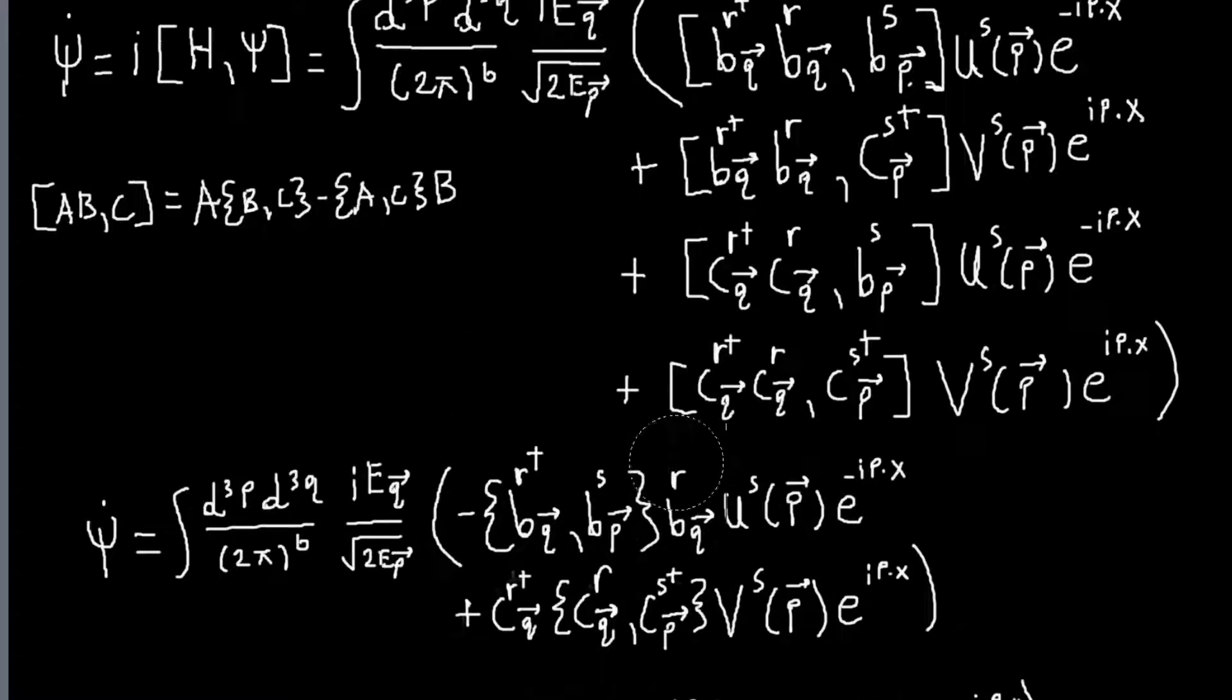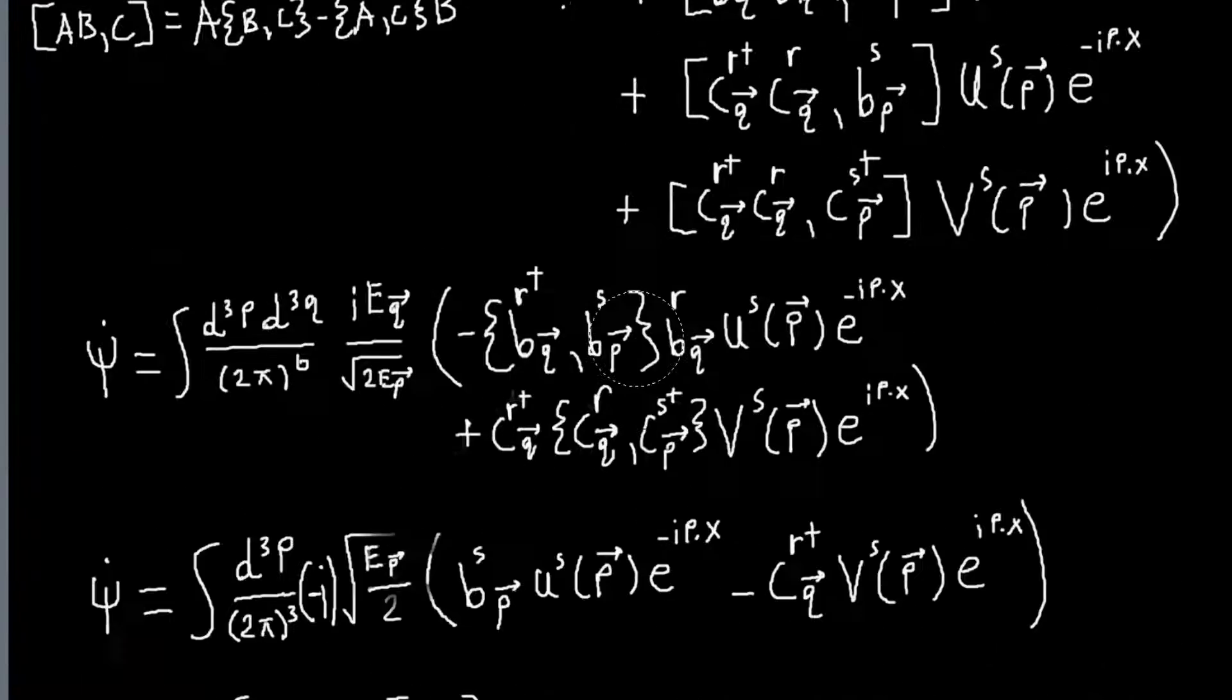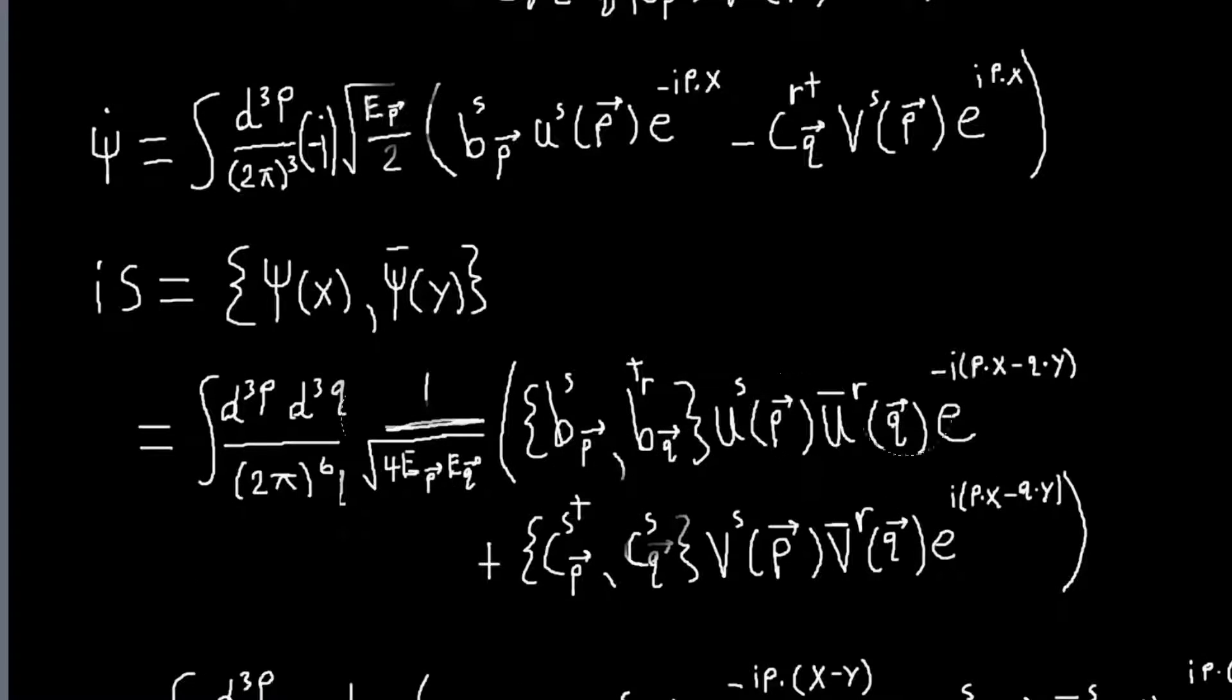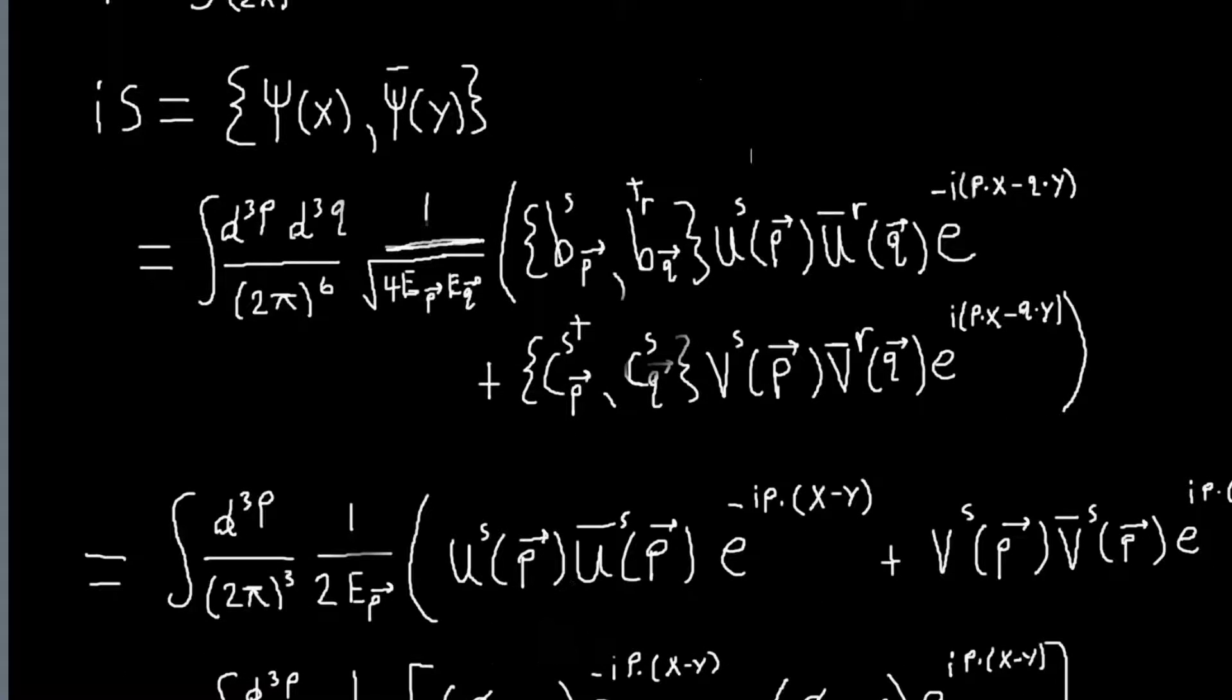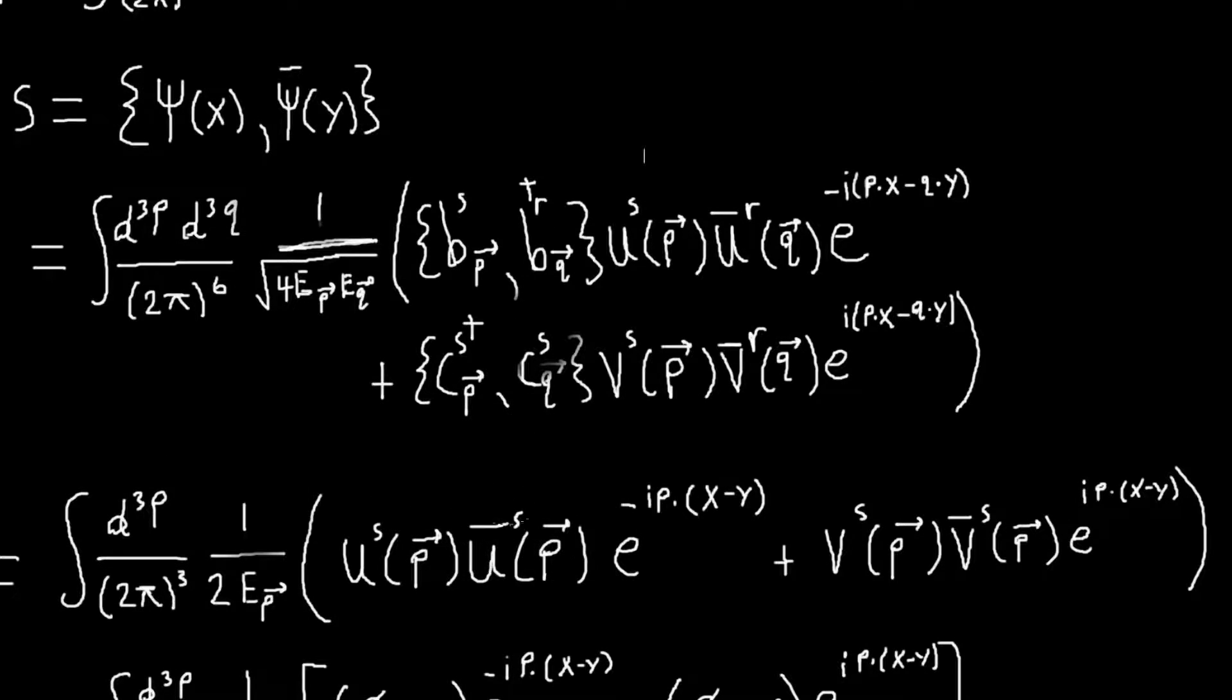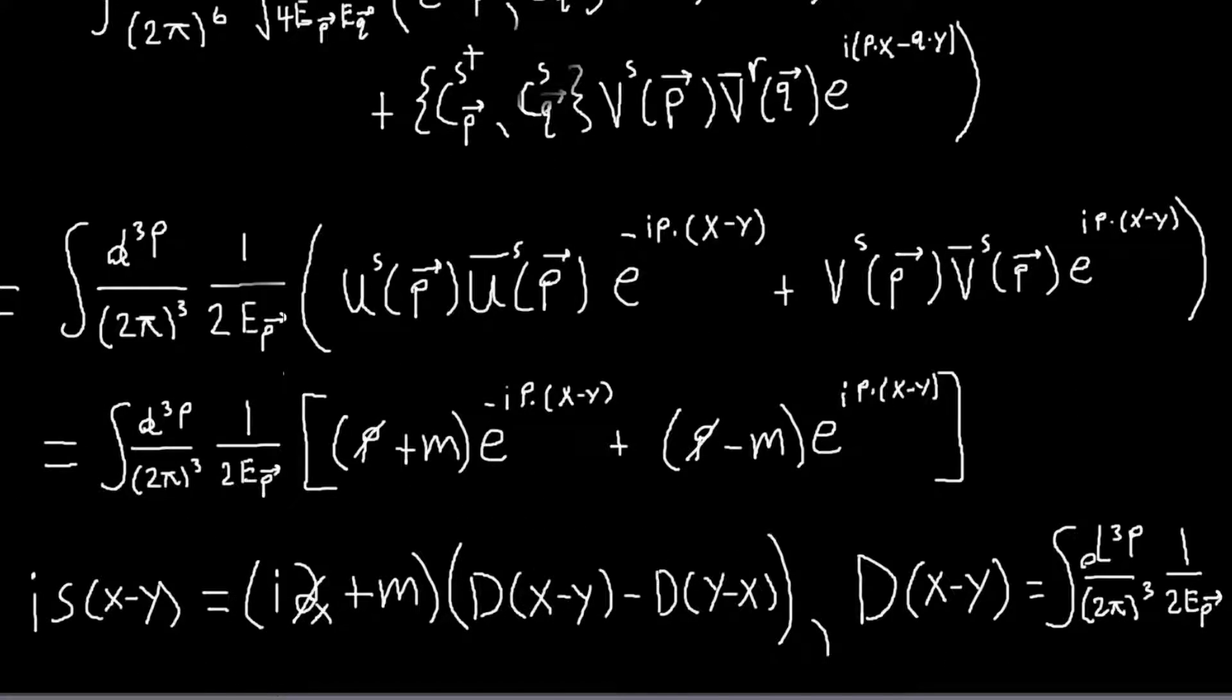And so there's four terms again, but the anti-commutator of this and this is 0, and this and this is 0, so only two are left. So yeah, so you get this. And then from here you just use anti-commutation relations for B and C. So basically, this expression Q will just become P and R will just become S, and then you use the outer product relation for u-s and u-bar-s, which is just these matrices. And then you can write this like this,